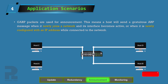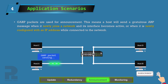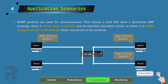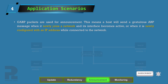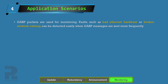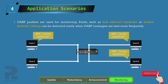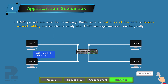The last application we'll talk about is the use of Gratuitous ARP messages for announcement. When a host is connected to a network and the interface becomes active, it broadcasts a Gratuitous ARP message. This is done by a host to proactively populate the ARP caches of other hosts on the network, so they won't have to initiate the standard ARP process for obtaining those mappings. Aside from this, they can also be used to monitor an interface for a change in status. When Gratuitous ARP messages are sent more frequently, it may indicate bad Ethernet hardware or broken network cabling.